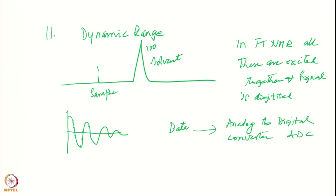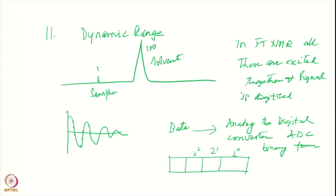Let us say the ADC has a resolution of 4 bits: 2⁰, 2¹, 2², and 2³. The largest number that can be stored is 1 + 2 + 4 + 8 = 15, i.e., 2⁴ − 1. In practice we use 12-bit or 16-bit digitizers. In a 12-bit digitizer, one bit is kept for the sign, leaving 11 bits, giving a maximum value of 2¹¹ − 1 = 2047.